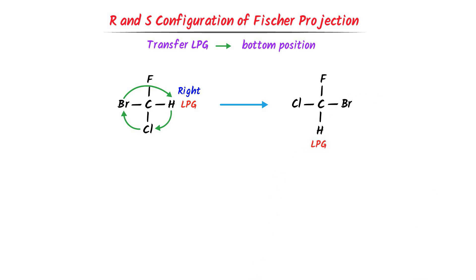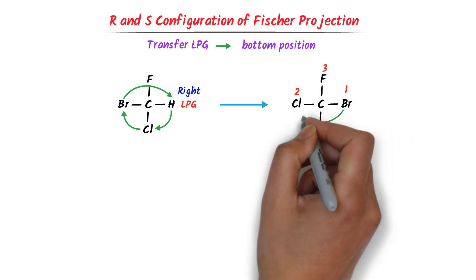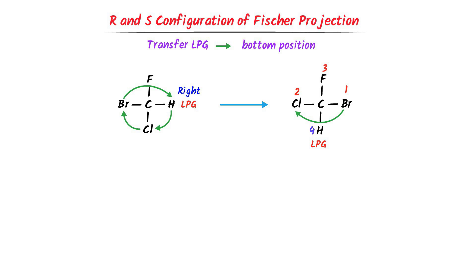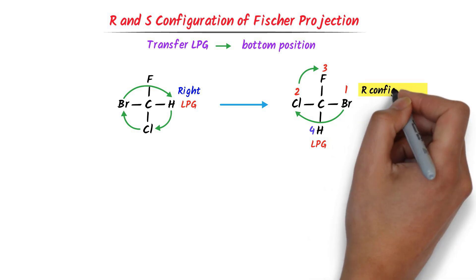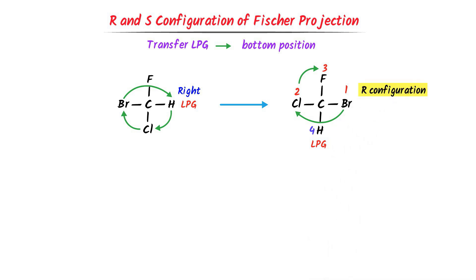Now LPG or hydrogen is present at the bottom. We know that bromine is given first priority, chlorine second priority, and fluorine third priority, while hydrogen is LPG. So I go from first to second, then second to third — this is clockwise rotation or R configuration. So the configuration of this organic compound is R.